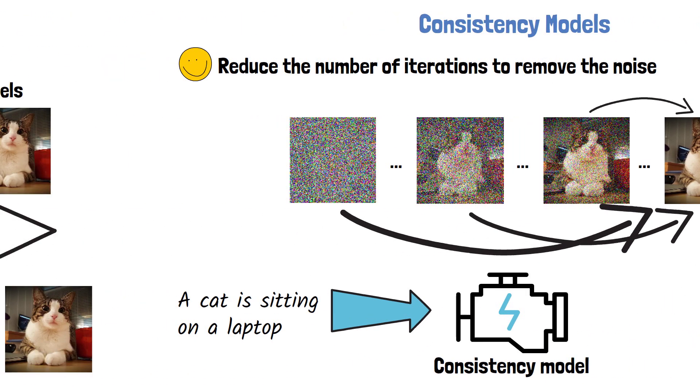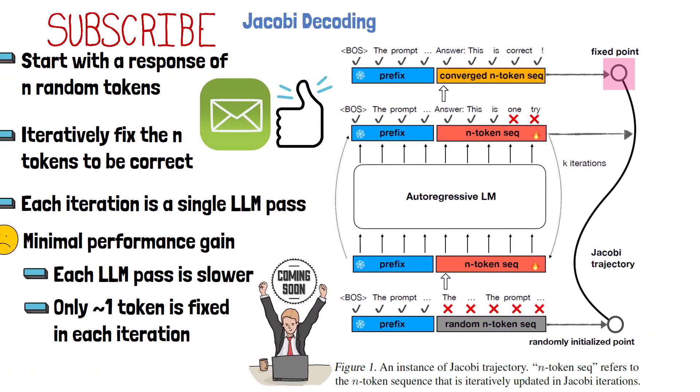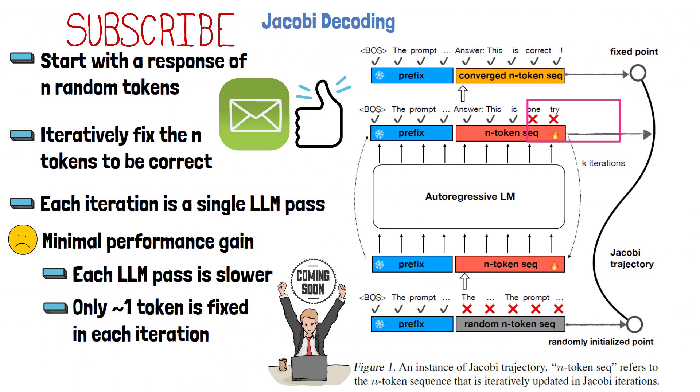Now if we go back to the Jacobi decoding figure, we still run a Jacobi decoding process, but we replace the regular LLM with a CLLM, which was trained over Jacobi trajectories, and this way significantly speed up the decoding process.